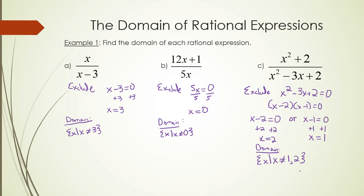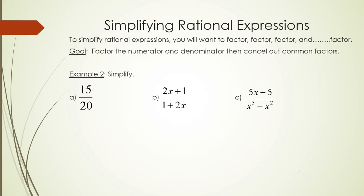So that's how to find the domain. How to simplify rational expressions is that you want to make sure you factor as much as possible, then you will cancel out common factors.